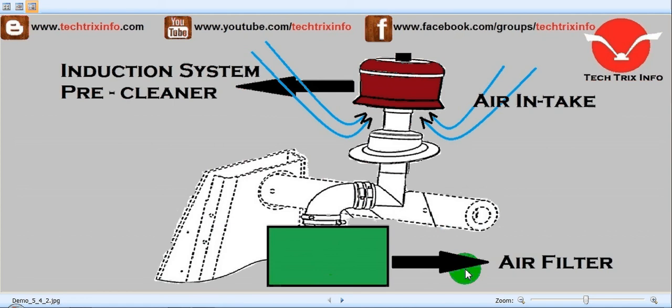After filtration, the pure air is directed towards the inlet manifold of the engine through the air filter. Diesel fuel is then pumped into this air, resulting in combustion and generating power. That is the function of the induction system — it consists of a pre-cleaner and an air filter, which clean the atmospheric air and transmit it to the inlet manifold.